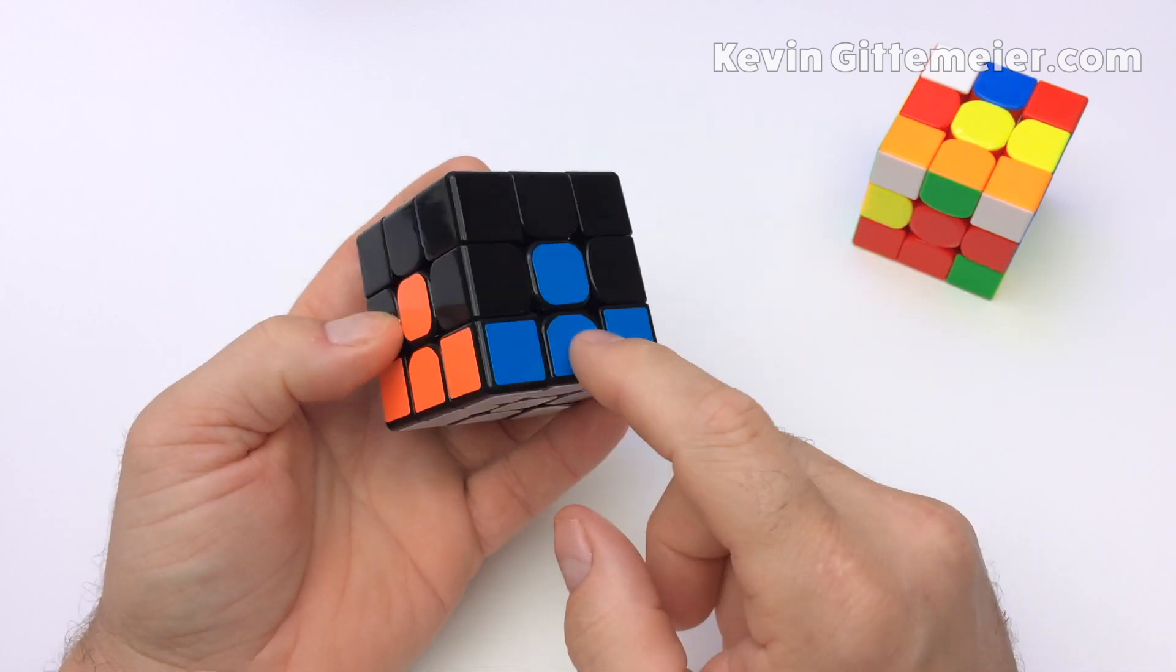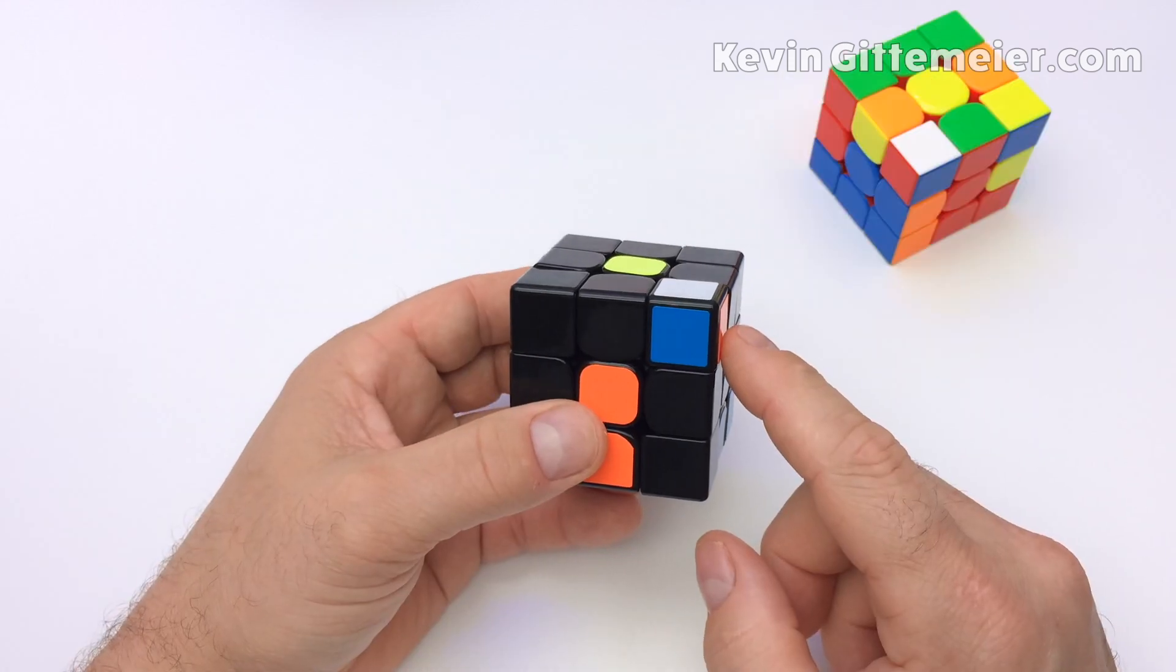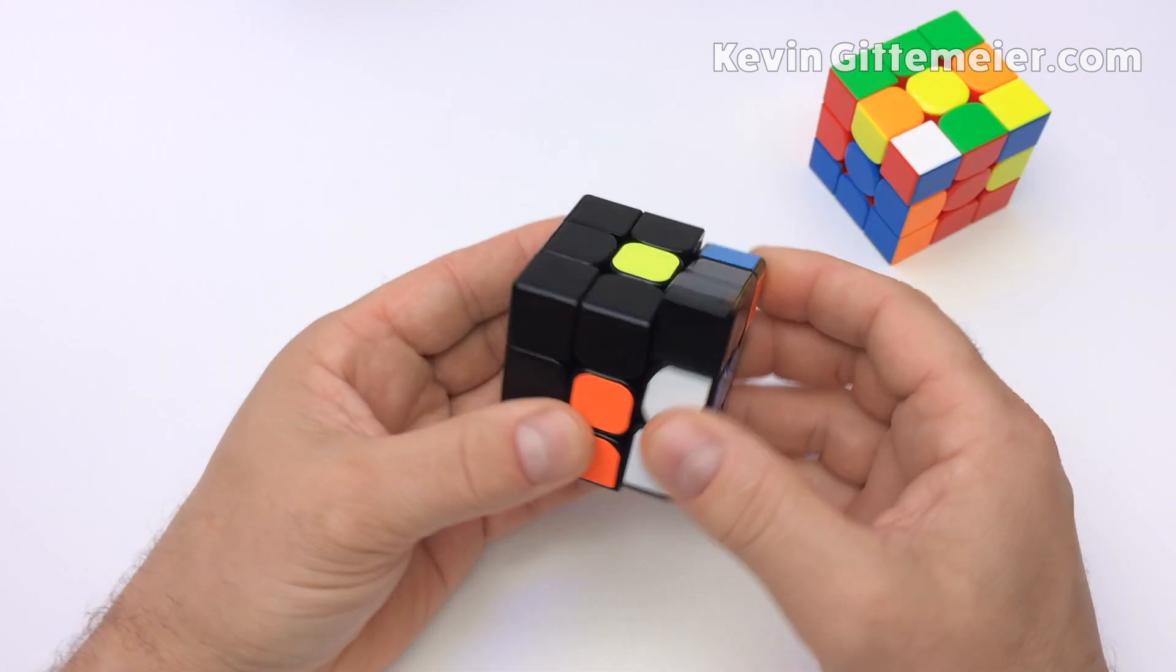Now we have all the corner pieces in the correct locations. So basically your corner pieces have to match these centers. If the white corner sticker is facing up, you can't insert it that same way.